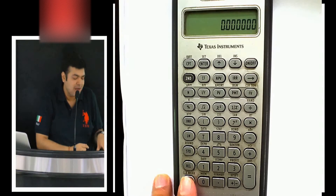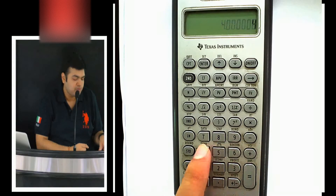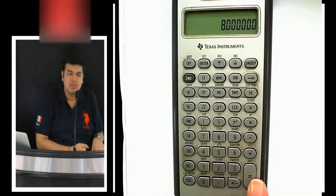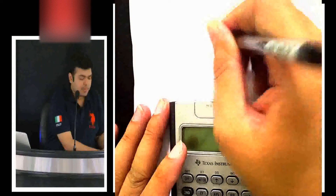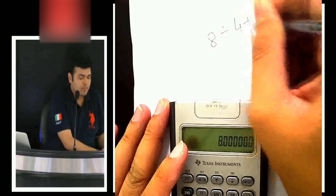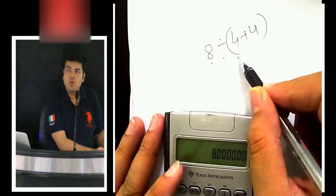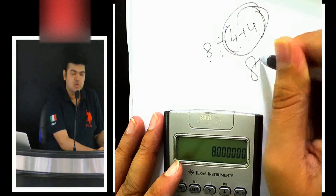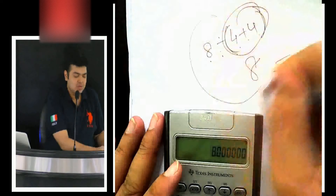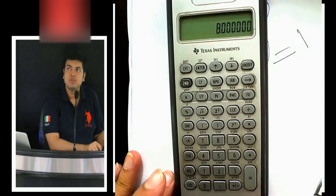For example, 8 divided by open bracket 4 plus 4 — when I close the bracket, the value 8 comes out on screen. So I'm doing 8 divided by, open bracket, 4 plus 4, close bracket. The screen shows 8 inside the bracket, and when I press equals I get 1. That is how brackets work.